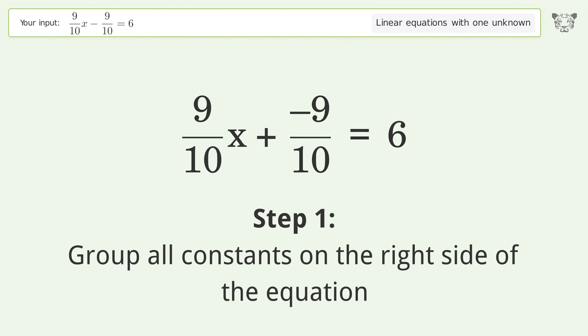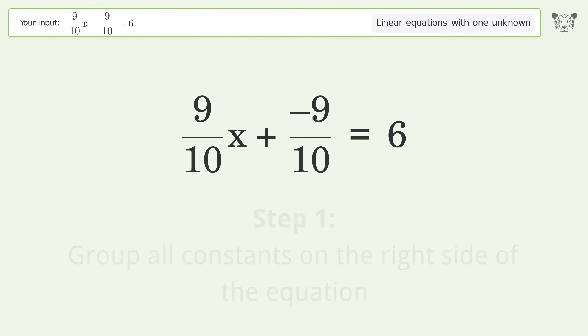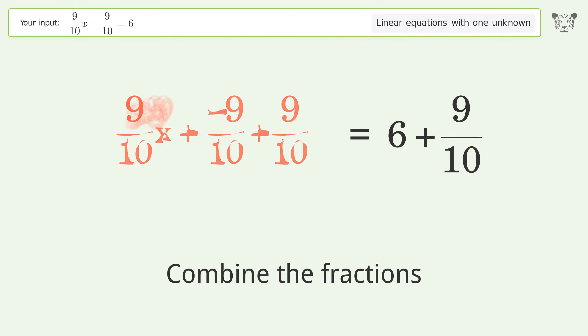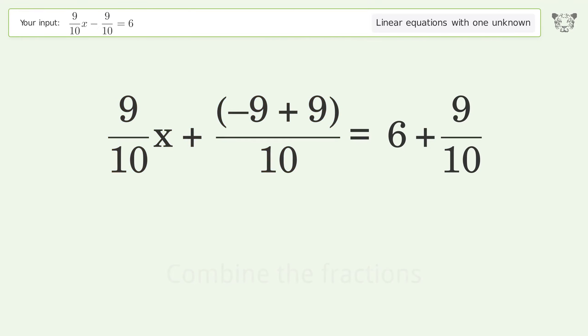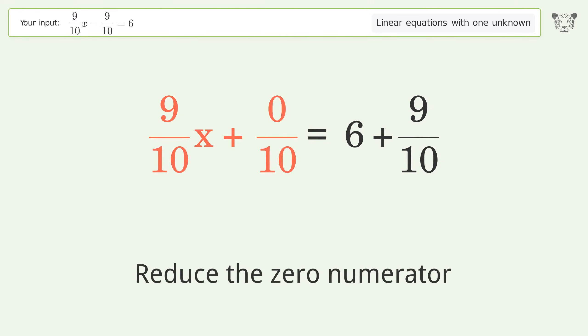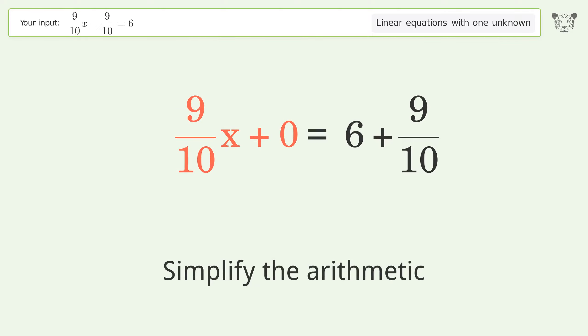Group all constants on the right side of the equation. Add 9 over 10 to both sides. Combine the fractions. Combine the numerators. Reduce the zero numerator. Simplify the arithmetic.